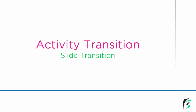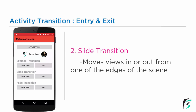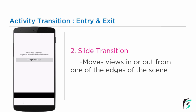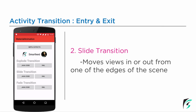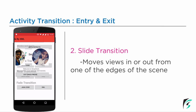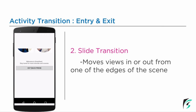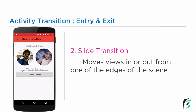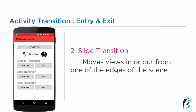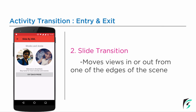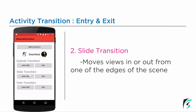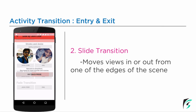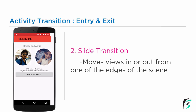Let us move to Android Studio and start implementing it. But before that, what is Slide Transition? Slide Transition moves the view in or out from the screen from one of the edges of the scene. On the left side of the screen, you can see the demo which we will be creating for the Slide Transition. On clicking the Java Code Slide Transition button, we can see the activity changes and how the transition takes place. On clicking the back button, it executes the reverse transition and moves back. This way, we can set the edge of the scene from which the transition may occur — from the left, right, bottom, top, anything you want.